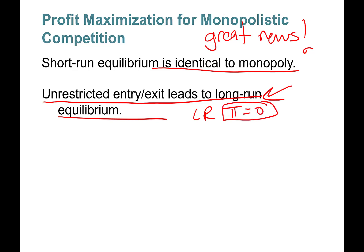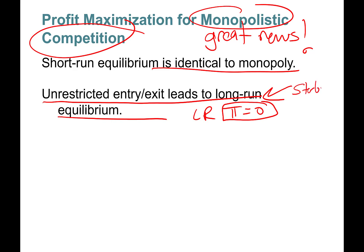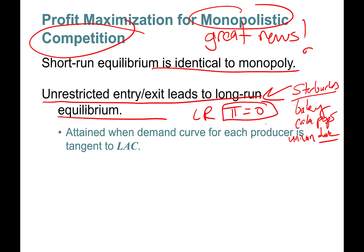In the long run, economic profit will always be zero for a monopolistically competitive firm, so firms need to constantly innovate. For instance, Starbucks has innovated many times — they introduced bakery items, cake pops, colorful drinks like the unicorn drink, special holiday drinks, and some locations even sell alcohol. They keep changing and innovating.